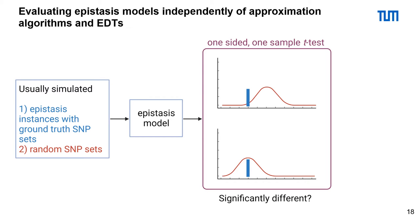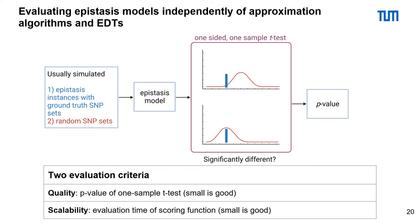Afterwards, we perform a one-sided, one-sample t-test. As an output, we get a p-value for the epistasis model. As a second evaluation criterion, we want to include the scalability — the evaluation time needed by the scoring function. For both evaluation criteria, we want to achieve the lowest possible score.